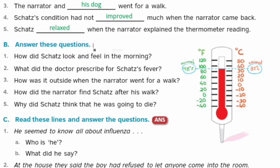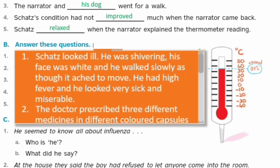Answer these questions. First question: How did Skets look and feel in the morning? Subha, Skets kaisa dikh raha tha aur kaisa mehsus kar raha tha? Answer: Skets looked ill. Woh bimaar dikh raha tha. He was shivering — tharthra raha tha. His face was white and he walked slowly, as though it ached to move. He had high fever and he looked very sick and miserable. Usko bahot tez bukhar tha aur woh bahot bimaar aur miserable dikh raha tha.